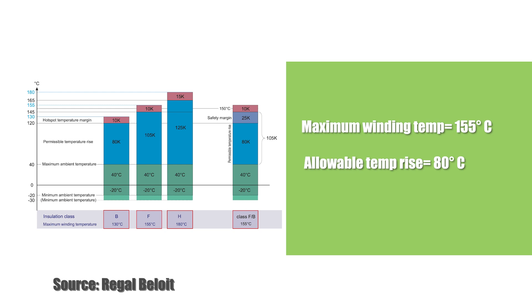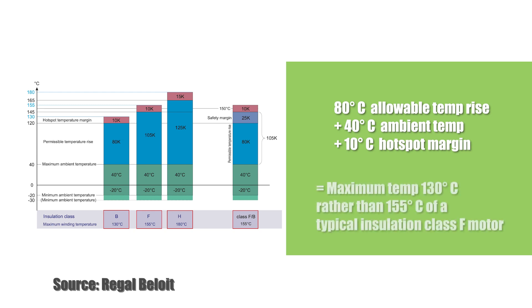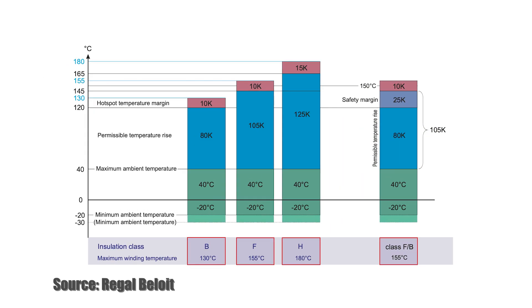Adding 80 degrees C to the ambient temperature of 40 degrees C, plus the 10 degrees C hotspot margin of insulation class F, gives a maximum temperature of 130 degrees C, rather than the 155 degrees C of a typical insulation class F motor. This means that the F slash B motor has an additional 25 degrees C safety margin, which can provide significantly longer insulation life, and therefore motor life.